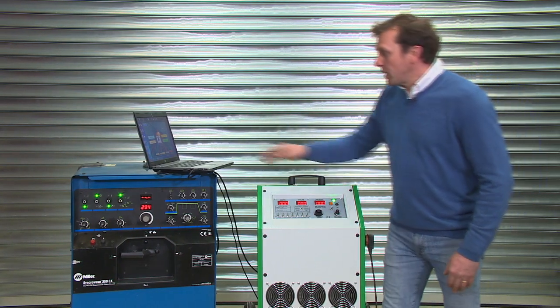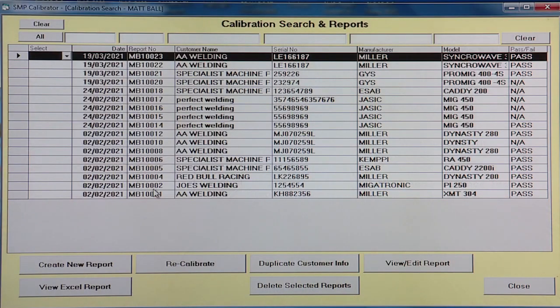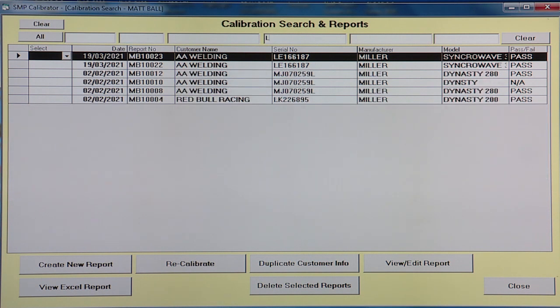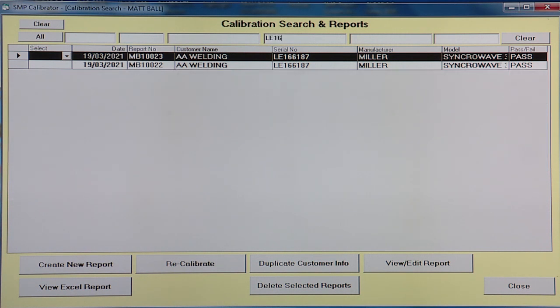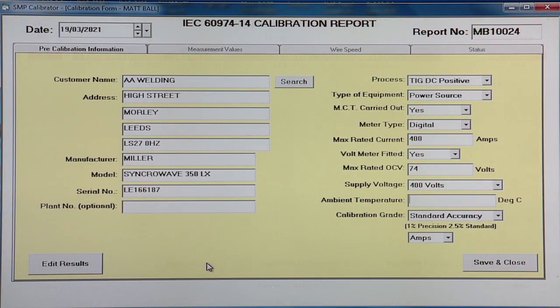As previously, we're going to open a calibration form. This machine, I know we've done this before, so I can quite easily and quickly find it using the search engine on the serial number. Once it's highlighted, simply click the recalibrate button and we've got everything there.